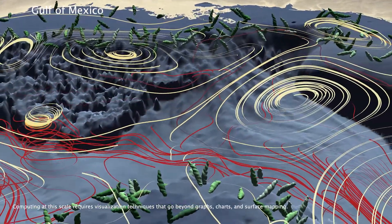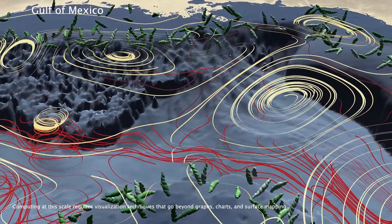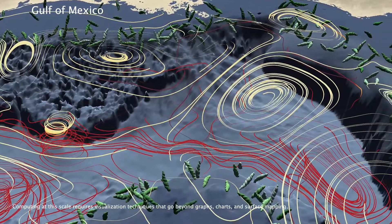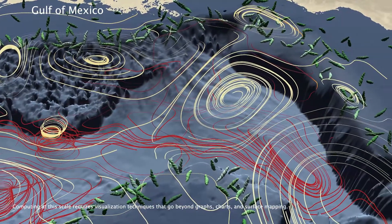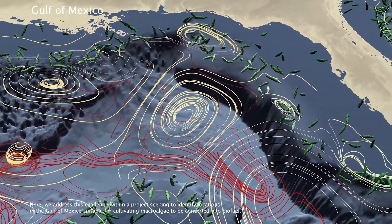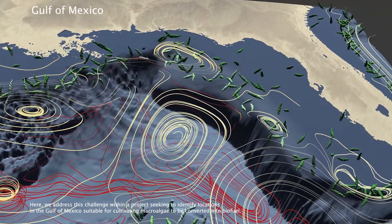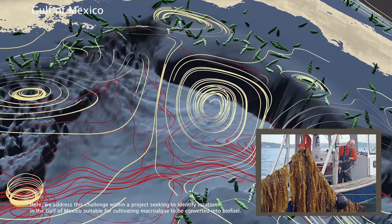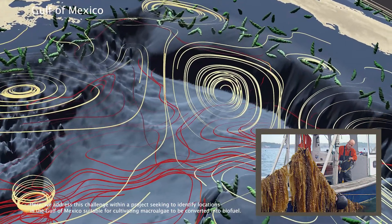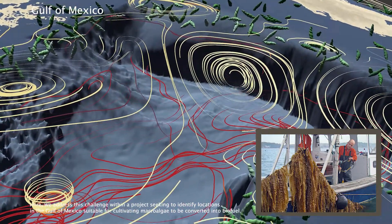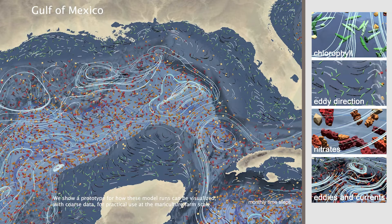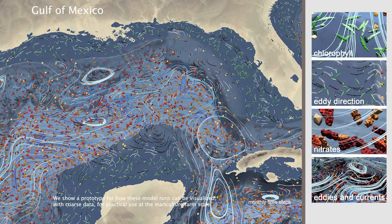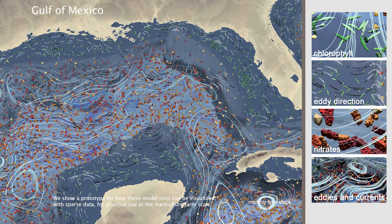Computing at this scale requires visualization techniques that go beyond graphs, charts, and surface mapping. Here we address this challenge within a project seeking to identify locations in the Gulf of Mexico suitable for cultivating macroalgae to be converted into biofuel. We show a prototype for how these models can be visualized with coarse data for practical use at the Mariaculture Farm scale.